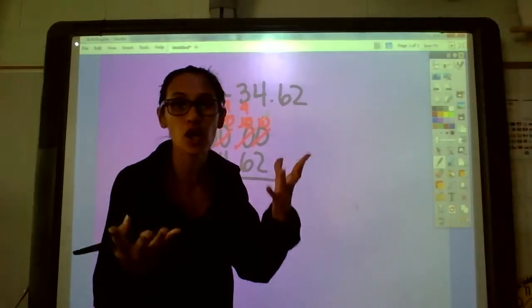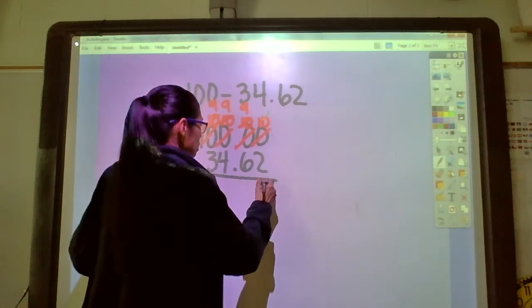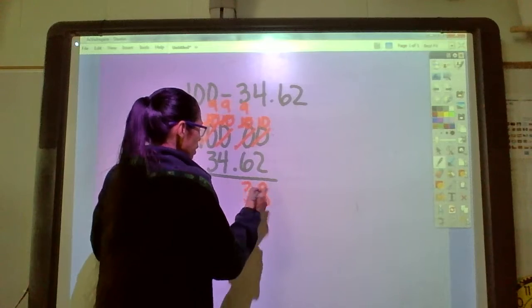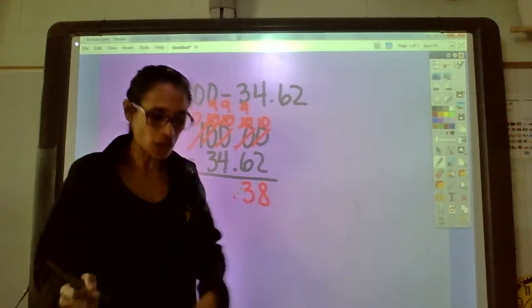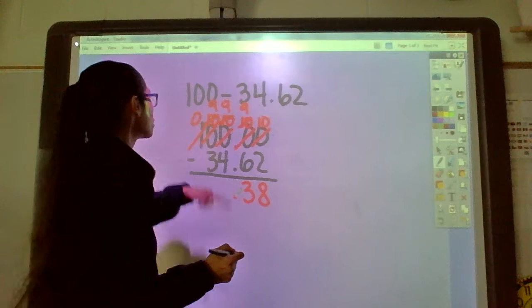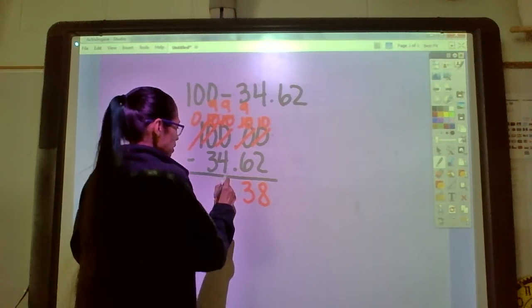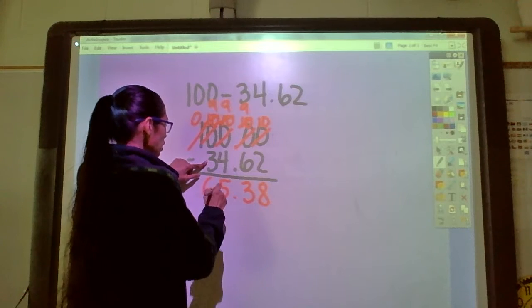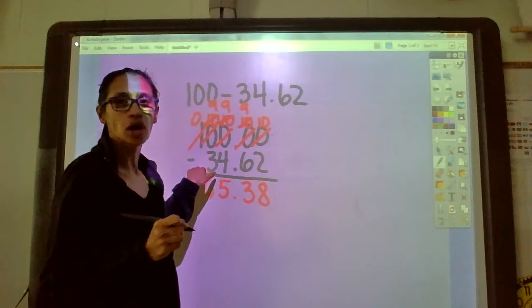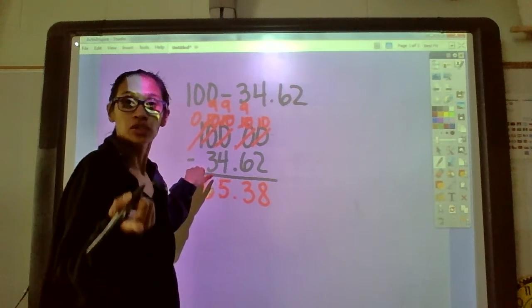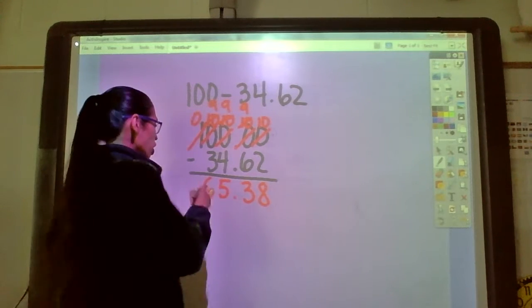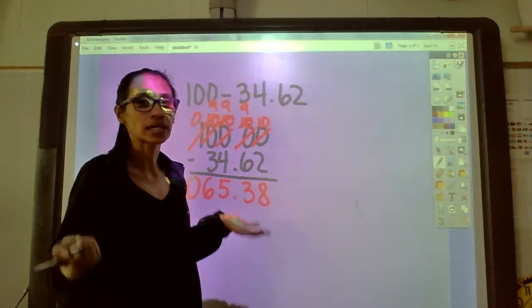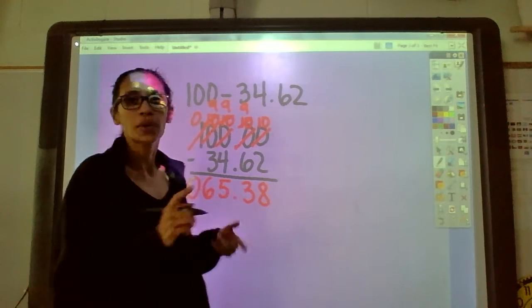10 minus 2, use your fingers if you don't know, that is 8. 9 minus 6, that is 3. Decimal goes down straight to the ground. 9 minus 4, that's 5. 9 minus 3, that's 6. And 0 take away nothing, that's nothing. You can leave it alone just like that since we're done or you can put that zero in that spot if you'd like to. Either way it's correct.